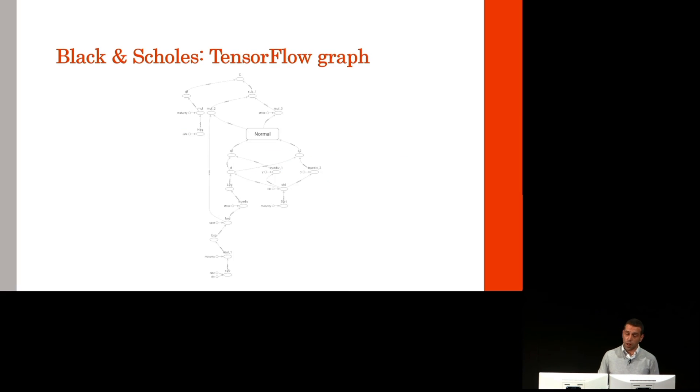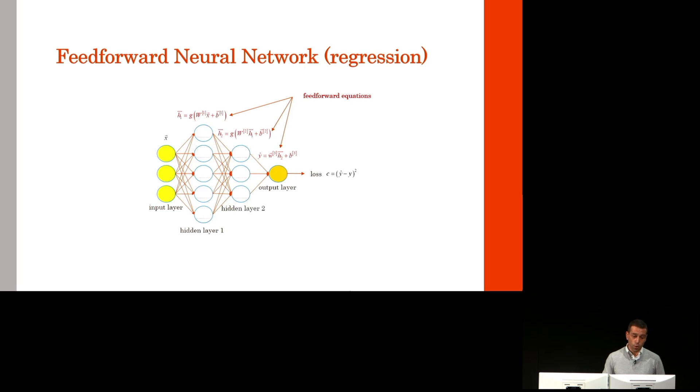A computation graph is not only an abstract way of thinking about the computation. It's a real thing in memory. In TensorFlow, you can visualize it. The graph of Black-Scholes looks like this.